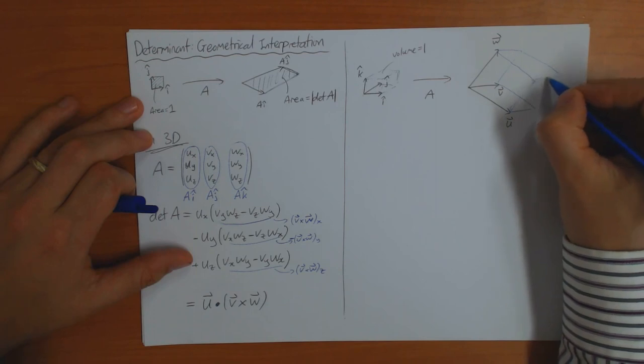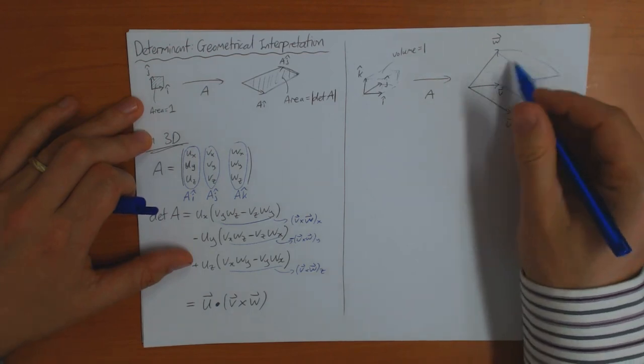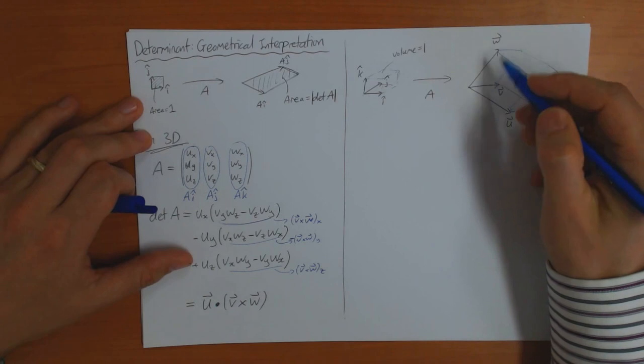So you end up with a shape like this. This is called a parallelepiped. It's like a cube, but the angles here don't have to be 90 degrees.